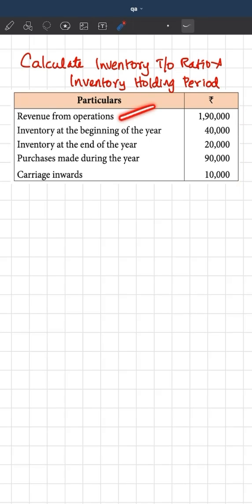You are given information about revenue from operations, inventory at the beginning and end of the year, purchases made during the year, and carriage inwards expenses.